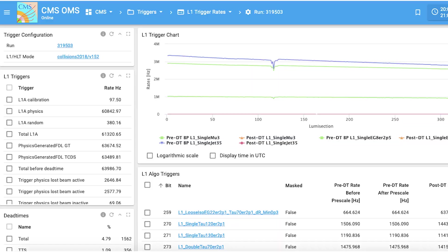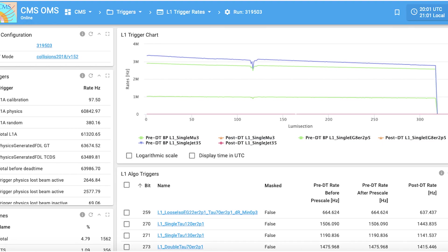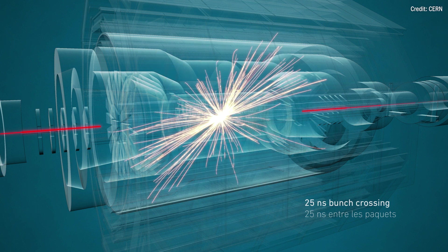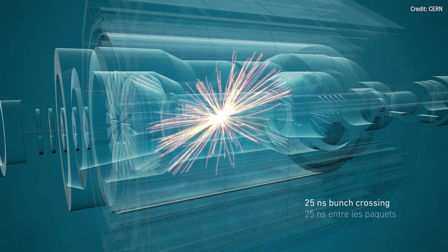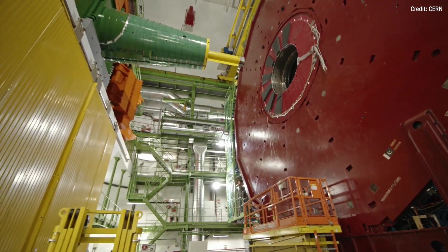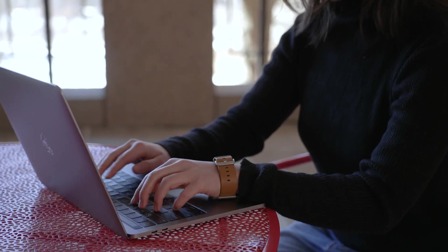Currently, I'm working on developing a new trigger algorithm to select interesting collision events. So the trigger system filters the data for further analysis. Up to about one billion collisions take place each second inside the detector, only a fraction of which can be stored. Currently, the rejection factor is about a thousand, so there is always room for improvement in the selection algorithm.